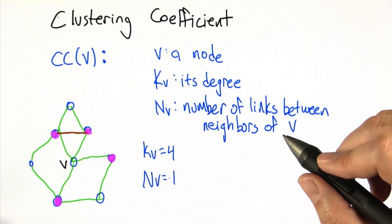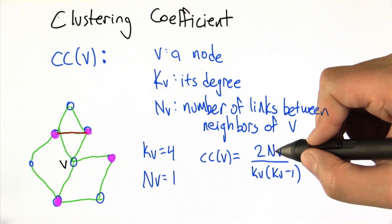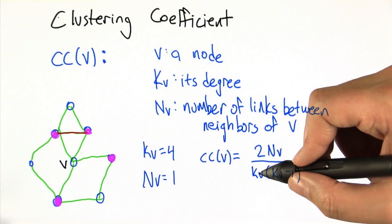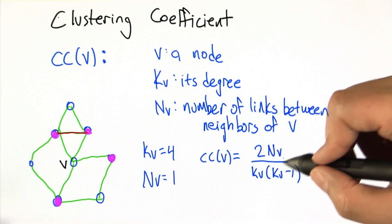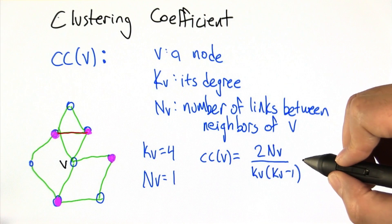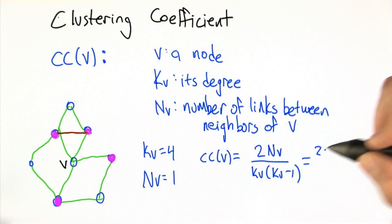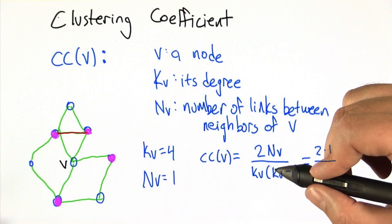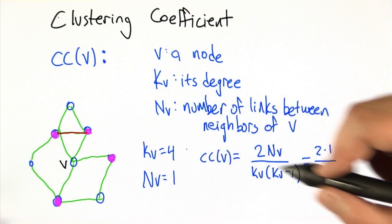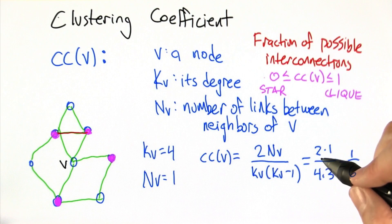Now we're going to combine these quantities together as follows. We take twice the number of neighbor links divided by the degree of v times k_v minus 1. This may look a little odd, but let's compute what it is. In this case, 2 times n_v (which is 1) divided by k times k minus 1, so that's 4 times 3. The result we get for this particular v is 1/6.